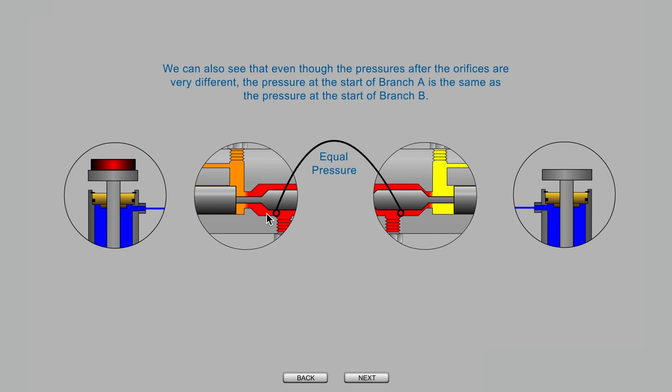If the pressure load for the A branch and the pressure load for the B branch is exactly the same where the flow is divided, then flow rates to both branches will be the same and both cylinders will travel at the same speed.